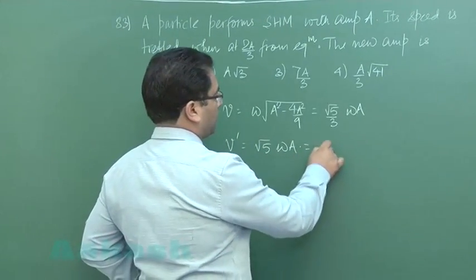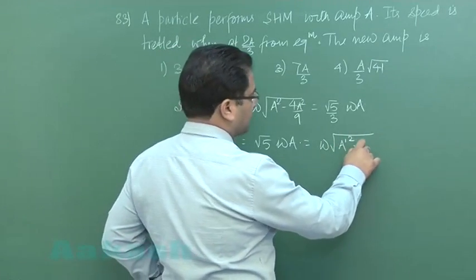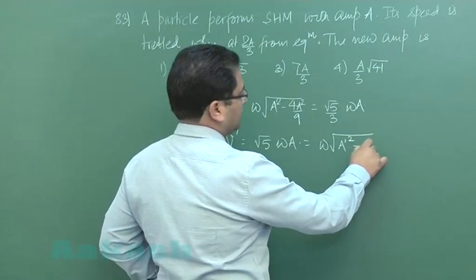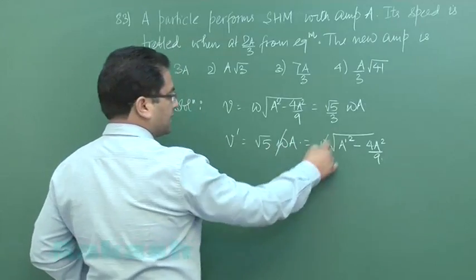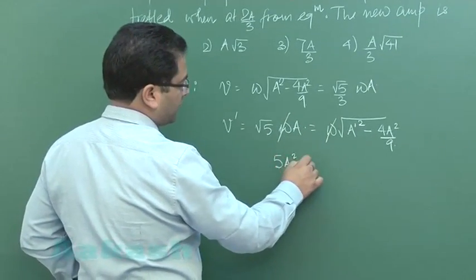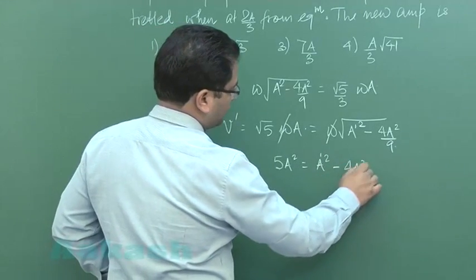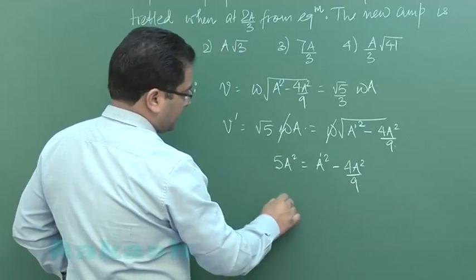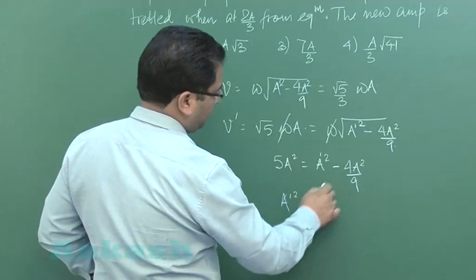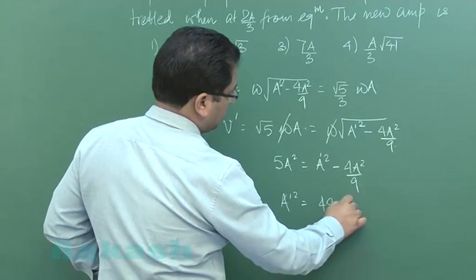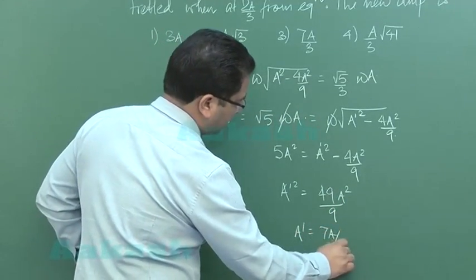So it would be omega root A dash square is the new amplitude minus the position 4A square by 9. Let us solve this: omega cancels and squaring both sides 5A square is A dash square minus 4A square by 9, so A dash square is 45 plus 4 is 49A square divided by 9 and the new value of amplitude would be 7A by 3.